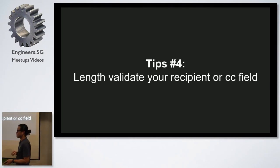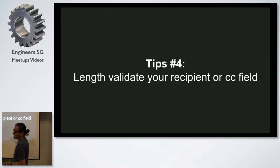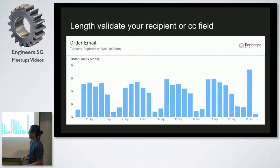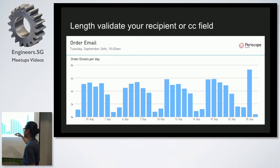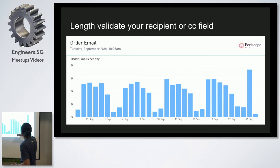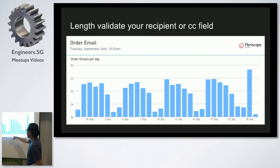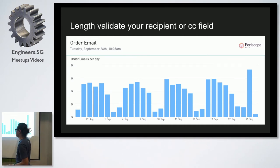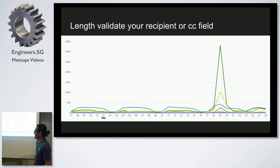Tip number four — and this is something we experienced recently — is to length-validate your recipient and CC fields. Looking at our order email graph, the 19th of September looked the same as any other day, so you probably wouldn't notice anything wrong. But on the 19th of September, our SendGrid account got deactivated. The reason was a spike on that day — we were sending around 300,000 emails. Due to that, our account was suspended.